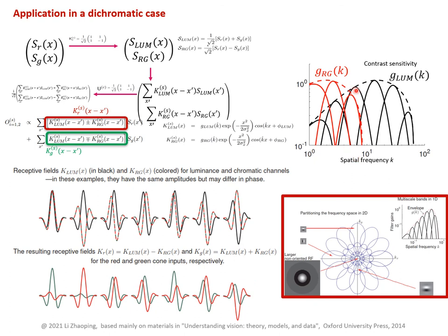In this intermediate region of the frequency band, neurons are not at zero frequency, so they are tuned to orientation. Therefore, these neurons are not only sensitive to colour but are also orientation-tuned. These neurons are equally sensitive to luminance because these are the bands where the luminance sensitivity and chromatic sensitivity are comparable.